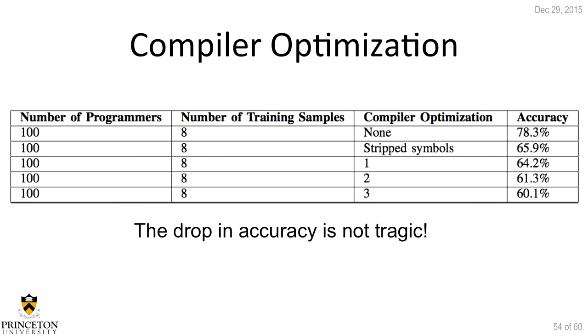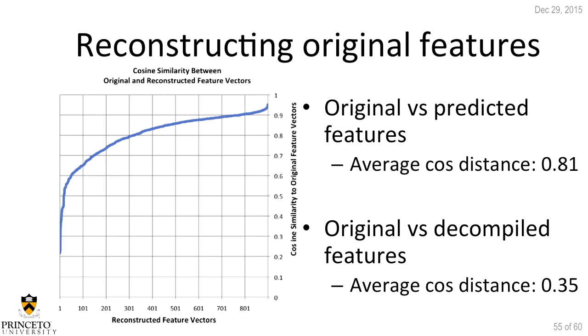Is compiler optimization like the translation of obfuscation for binaries — will it anonymize code? For the first time in the literature, we tried compiler optimization and stripping symbols. Without optimizations, we de-anonymize 100 programmers at 78% accuracy. After stripping symbols from binaries, accuracy drops to 66%. With level 1, level 2, and level 3 optimizations — cumulative, making programs more efficient and faster — the accuracy doesn't decrease dramatically. With the highest level (level 3) we still get 60% accuracy. So compiler optimization is not the solution to anonymizing binaries.